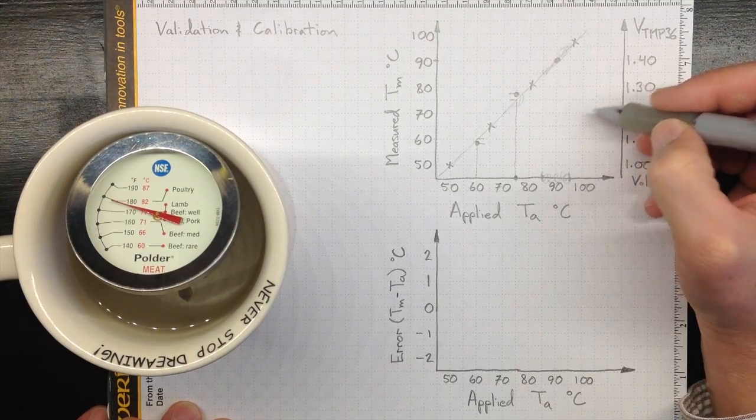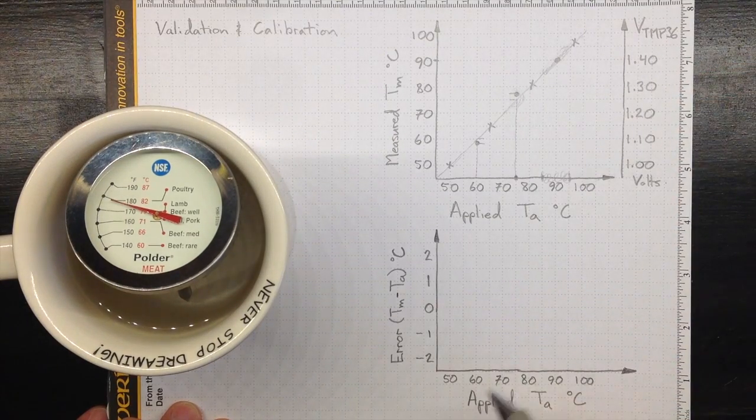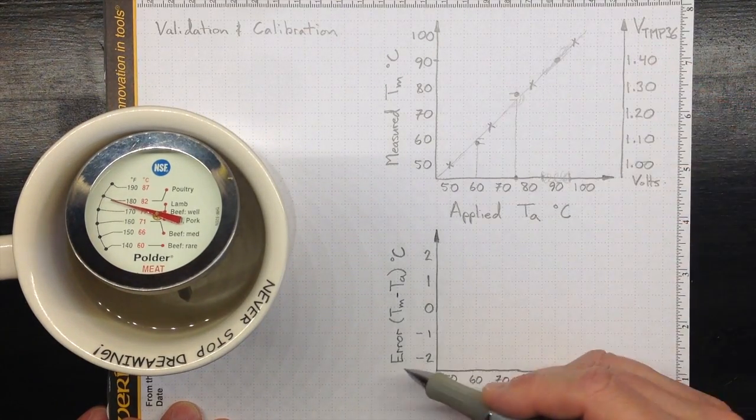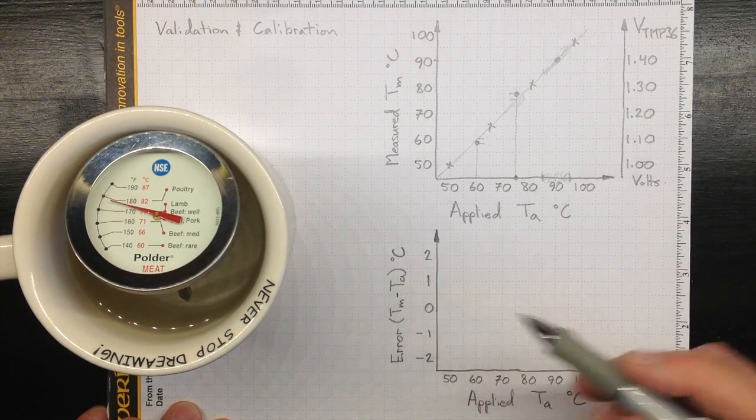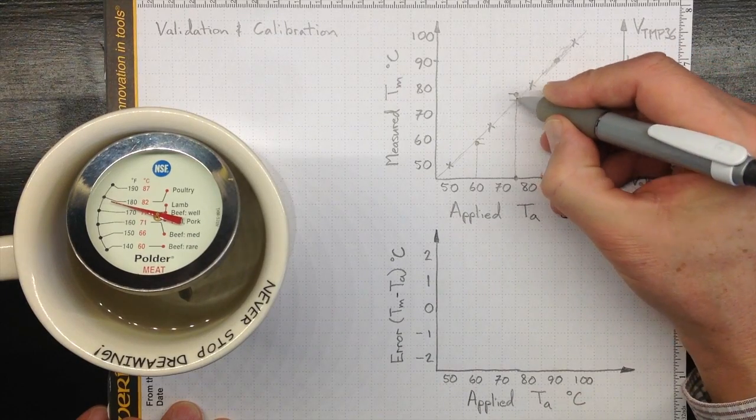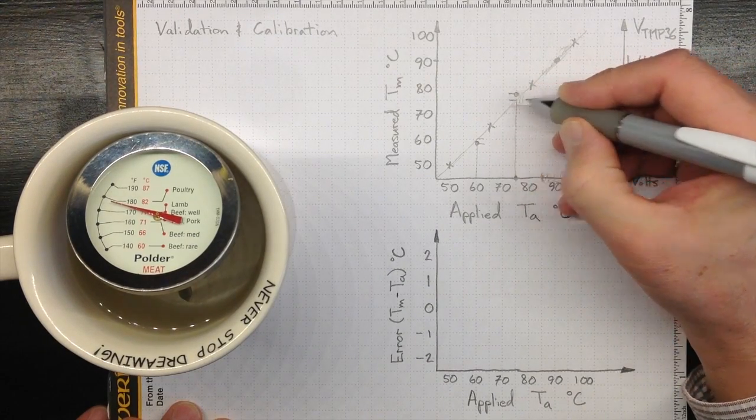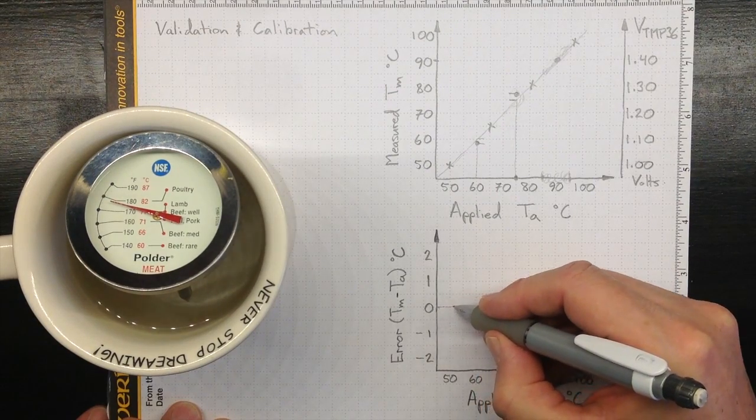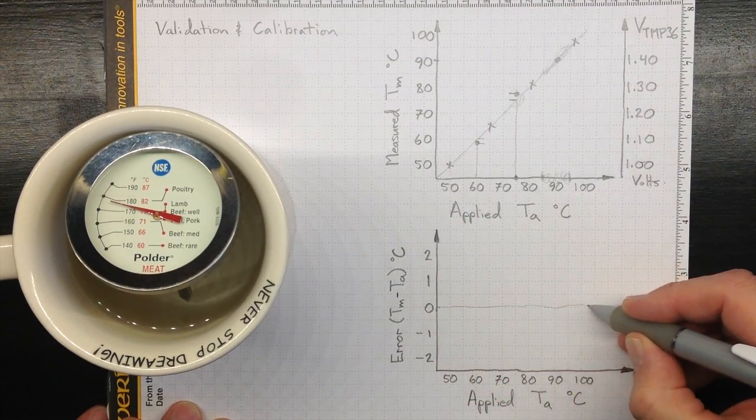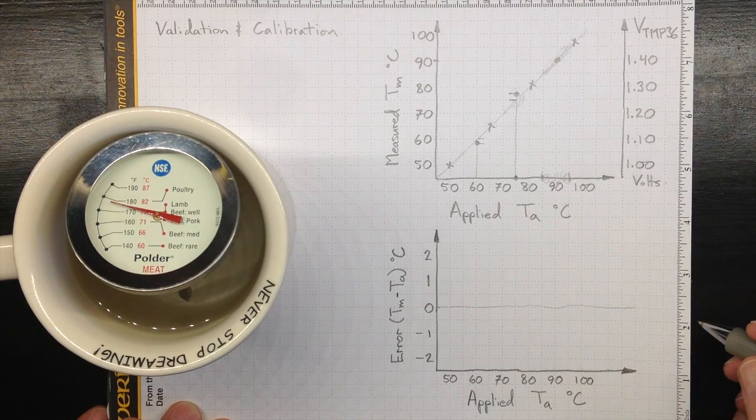So, if we zoom in, we can look at, instead of plotting the measured temperature, we can plot the error. How different is the measured temperature from the applied temperature? Plot this value in here. It should be zero. If our measurement was perfect, all of our points would lie along that straight line right there.